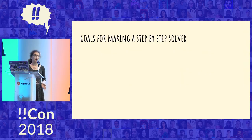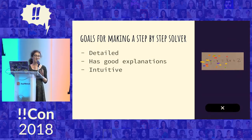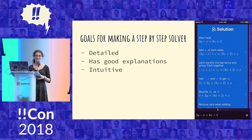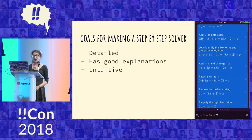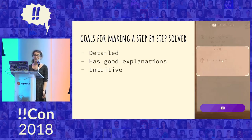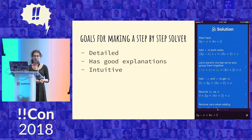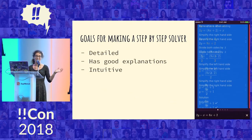And these were some goals we had for a step by step solver. So it should be detailed, not just here's the answer, but also all the ways that you get there. Have good explanations, not just what the steps are, but why. And it should feel intuitive. So the things that the algorithm comes up with should be something similar to what a human might come up with, not just some weird answer that gets you there.